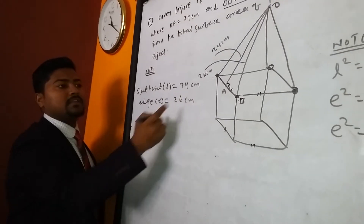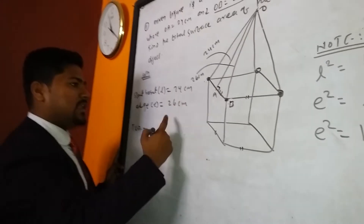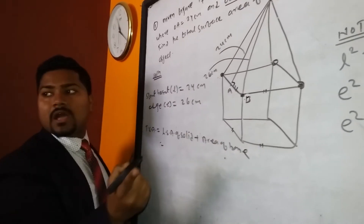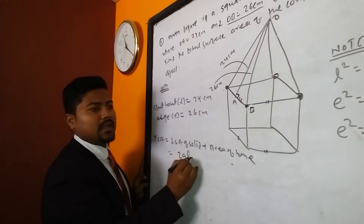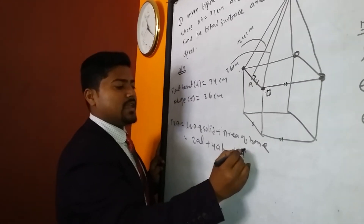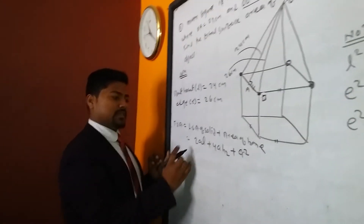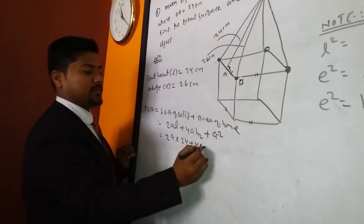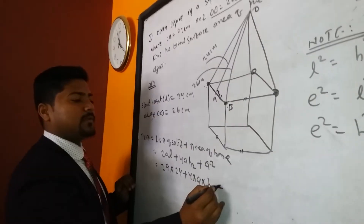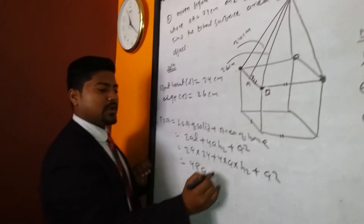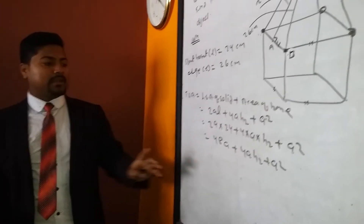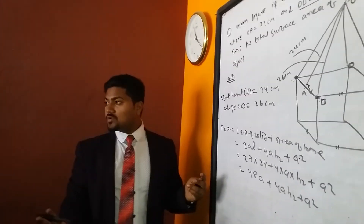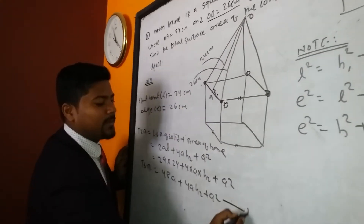Total Surface Area formula for this combined solid: TSA = 2aL + 4aS2 + a². We have L = 24 and e = 26, but a is not given and S2 (height of cuboid) is also not given. So TSA = 2a(24) + 4aS2 + a² = 48a + 4aS2 + a². We need to find a and S2 values first.